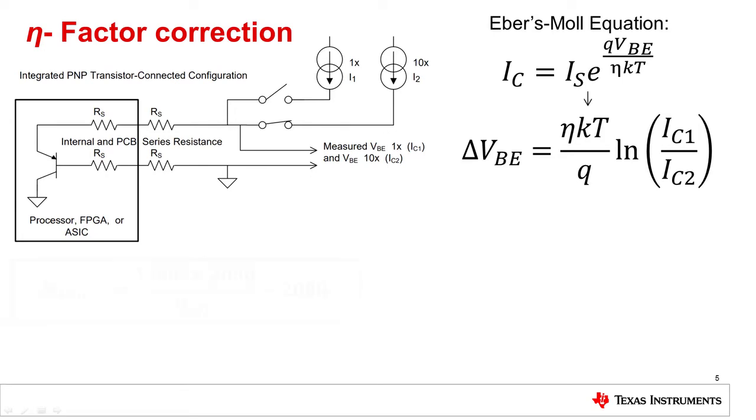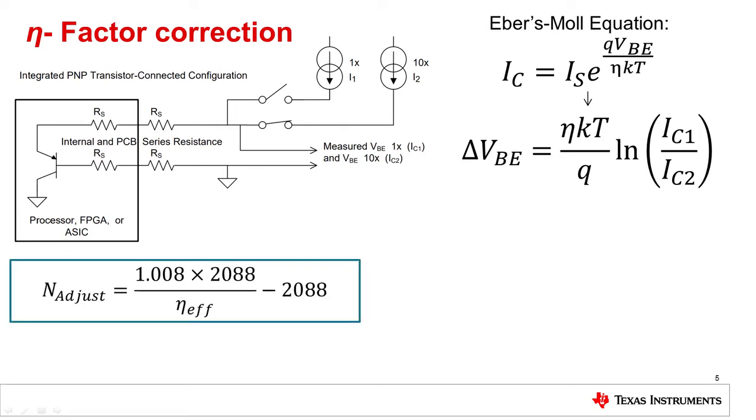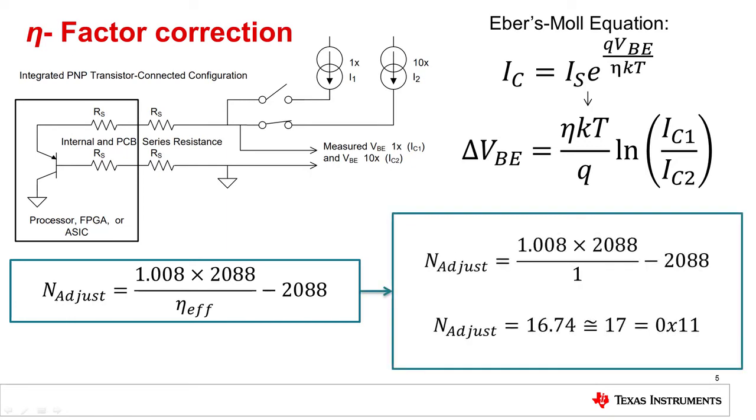The value of this register is referred to as n-adjust, and is related directly to the effective ideality constant of the monitoring transistor. The transistors on the TMP468 EVM have an ideality constant which is extremely close to 1. By plugging this into the equation shown, we find that the n-adjust value needed to compensate is 17, or 0x11. This is what we will set the upper byte of the n-factor correction register to within the example code.